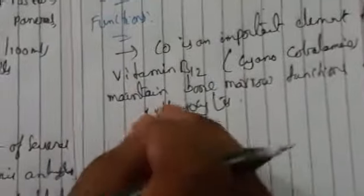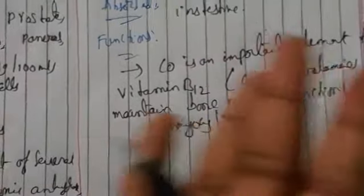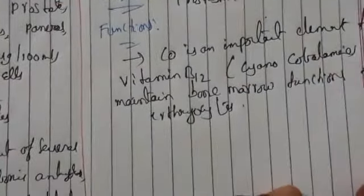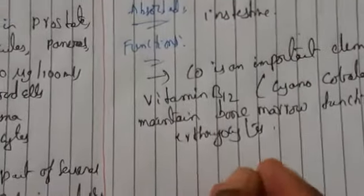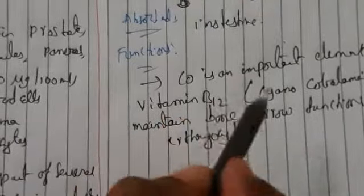Deficiency of cobalt causes anemia, since Vitamin B12 support is reduced. If excess cobalt is taken, there will be overproduction of erythrocytes causing polycythemia. Cobalt deficiency in other species causes macrocytic anemia, liver and spleen damage, and anorexia.